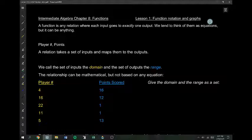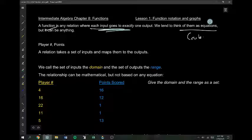You should have learned functions before. A function is any relation where each input goes to exactly one output. So if I have the input of two, I can only have one output, be it three or eight or something, but each input goes to only one output. We tend to think of them as equations, and the math term for equation is actually the word rule. We tend to think of them as rules, but they really can be anything.